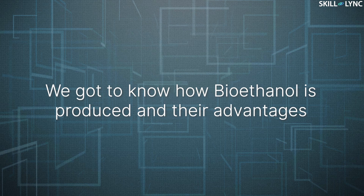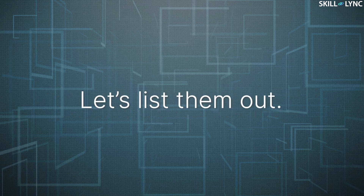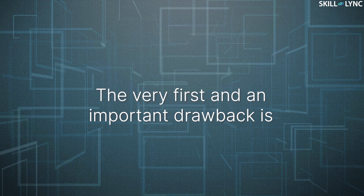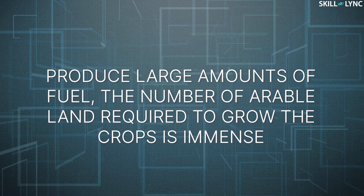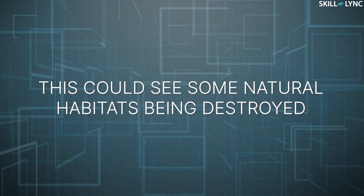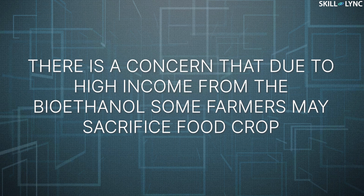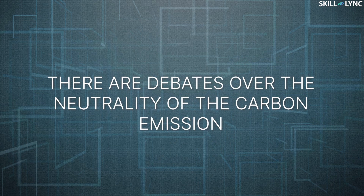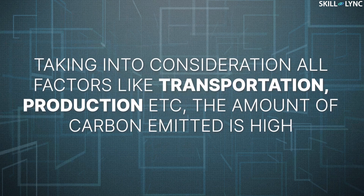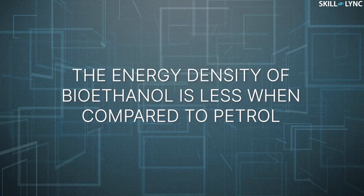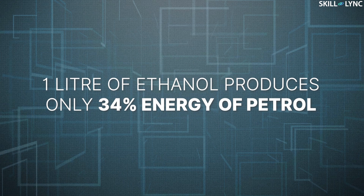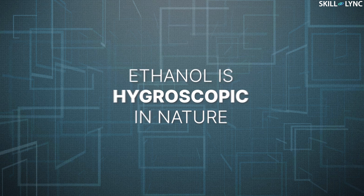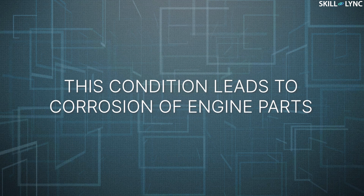We got to know how bioethanol is produced and its advantages. Shouldn't we be knowing about its drawbacks as well? The very first and important drawback is that in order to produce large amounts of fuel, the number of arable land required to grow the crops is immense, and this could see some natural habitats being destroyed. Next, there's a concern that due to high income from bioethanol, some farmers may sacrifice food crops, which may lead to an increase in food prices all over the world. Thirdly, there are debates over the neutrality of carbon emissions — taking into consideration all factors like transportation and production, the amount of carbon emitted is high. Next, the energy density of bioethanol is less when compared to petrol; one litre of ethanol produces only 34% of the energy produced by petrol. Finally, ethanol is hygroscopic in nature, meaning it absorbs water from air, and this condition leads to corrosion of engine parts.